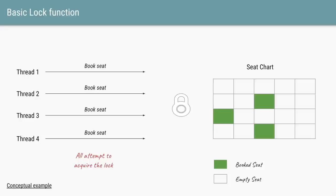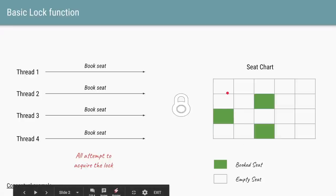Let's say we have an application where we allow users to book a seat, for example in a movie theater. Our application is multi-threaded, so we are allowing multiple users, each having a single thread, to access the application simultaneously. Now if two threads try to access and book the same seat, it's going to be an issue.